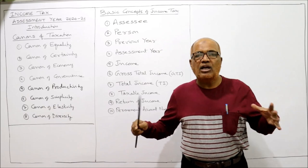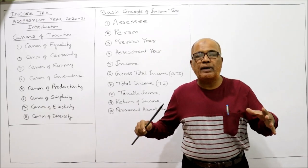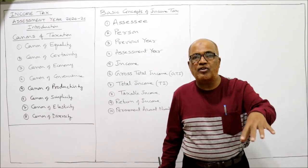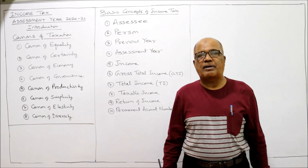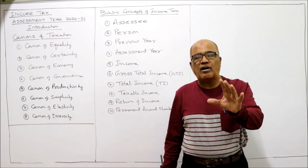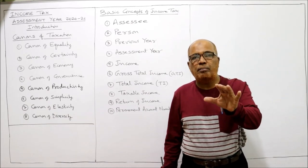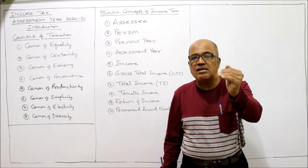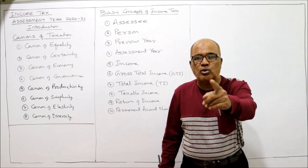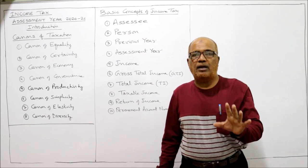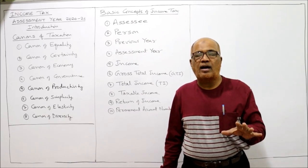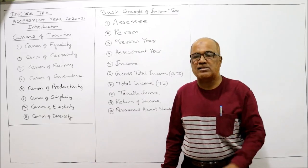The next canon is simplicity. One of the problems of the Income Tax Act is that it has so many provisions which are highly difficult for people to understand. The provisions of income tax should be made as simple as possible so that people can understand and follow the taxation rules.